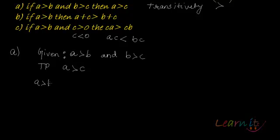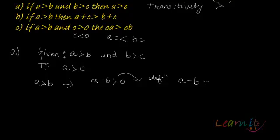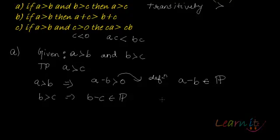A is greater than B. What does that imply? That implies A minus B would be greater than 0, or by definition of positive real numbers, A minus B would belong to the set of positive real numbers, which we called P. Similarly, B greater than C would imply B minus C would belong to the set of positive real numbers P.